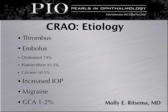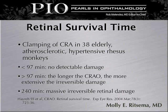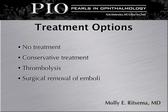The etiology is quite diverse, but the most common causes include a thrombus, an embolus originating in the form of cholesterol 74% of the time, platelet fibrin plaque 15.5%, and calcium at 10.5%. Patients also present with increased IOP, migraine, and GCA in 1-2% of patients. The retinal survival time includes clamping of the CRA in 38 elderly individuals with atherosclerosis and hypertension. These individuals were found to have no detectable damage in less than 97 minutes, but more than 97 minutes did show an abnormality.